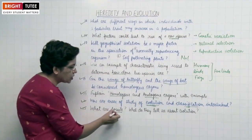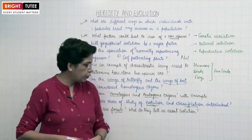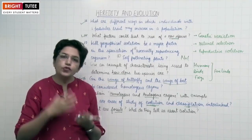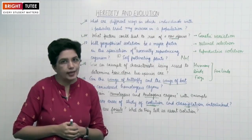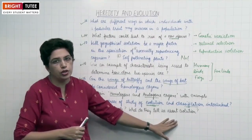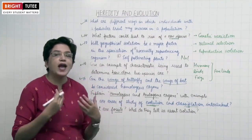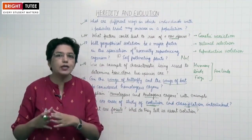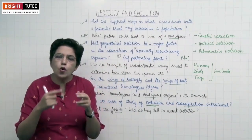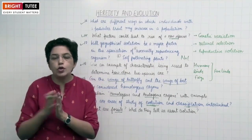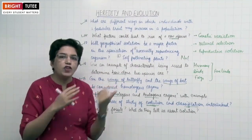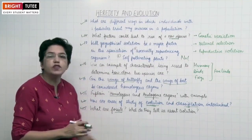Next question: What are fossils and what do they tell us about evolution? Fossils are the remains or impressions of organisms that lived in ancient times. The study of fossils has helped us understand evolution — by studying fossils, we have come to know that present organisms have evolved from previously existing organisms through a series of slow evolutionary processes. Evolution is a continuous process, as evidenced by the fossils found.